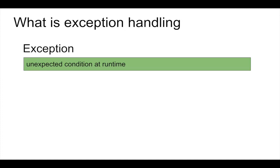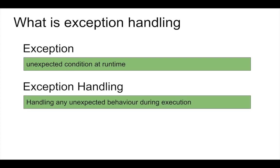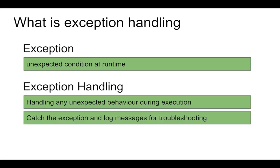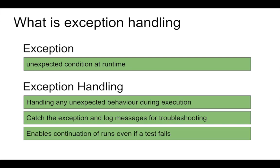An exception is any unexpected condition or behavior during execution of your program, and exception handling is handling this unexpected condition or behavior during execution. In exception handling, we catch the exception or the error and then log the messages for troubleshooting. Exception handling also enables us to continue our other tests — in case there is a failure in one test, it can handle the exception and then continue testing.